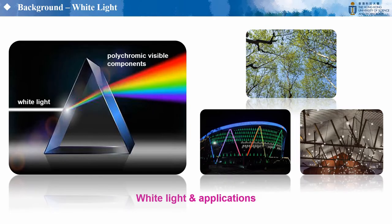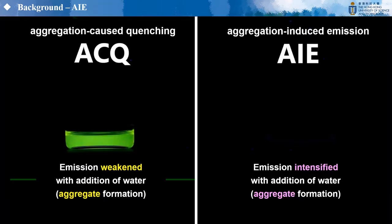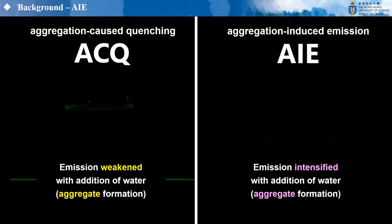White light, which contains polychromatic visible components, affects the realism of organisms and has the potential for advanced applications. However, the aggregation-caused quenching (ACQ) effect in the aggregate state blocks the development and utilization of organic emitters.